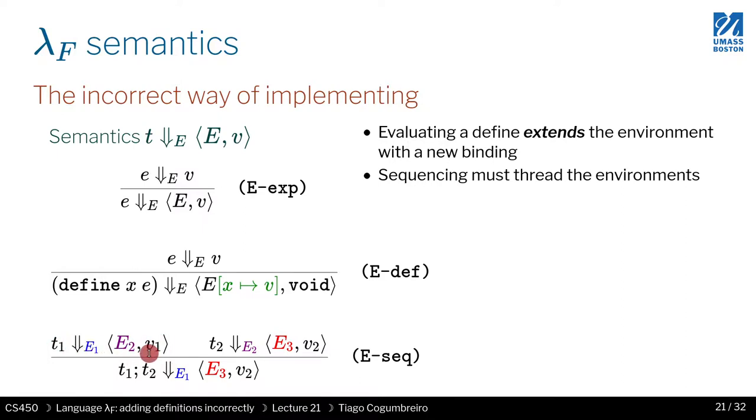For the sake of simplicity, let's assume T1 was a define. So V1, as we can see, is going to be void. So we don't really need V1 when we're sequencing. V1 is ignored.